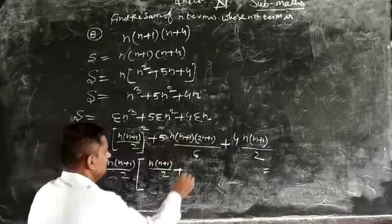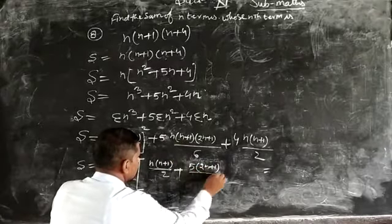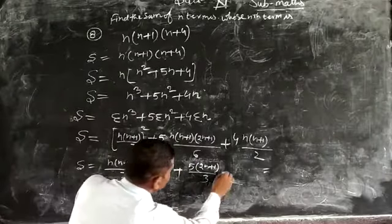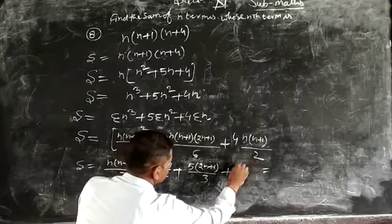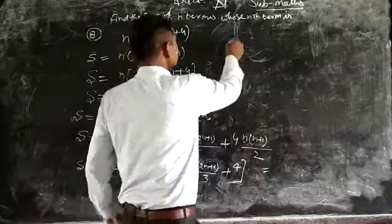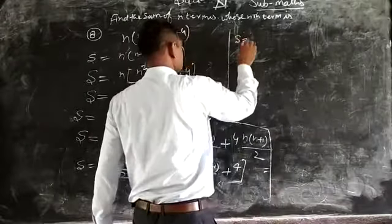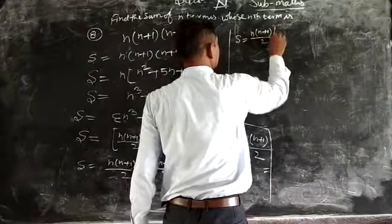S comes to n(n+1)(2n+1)/6 times 5, plus (2n+1)/3 times 6, plus n(n+1)/2 times 4. Again take 2.